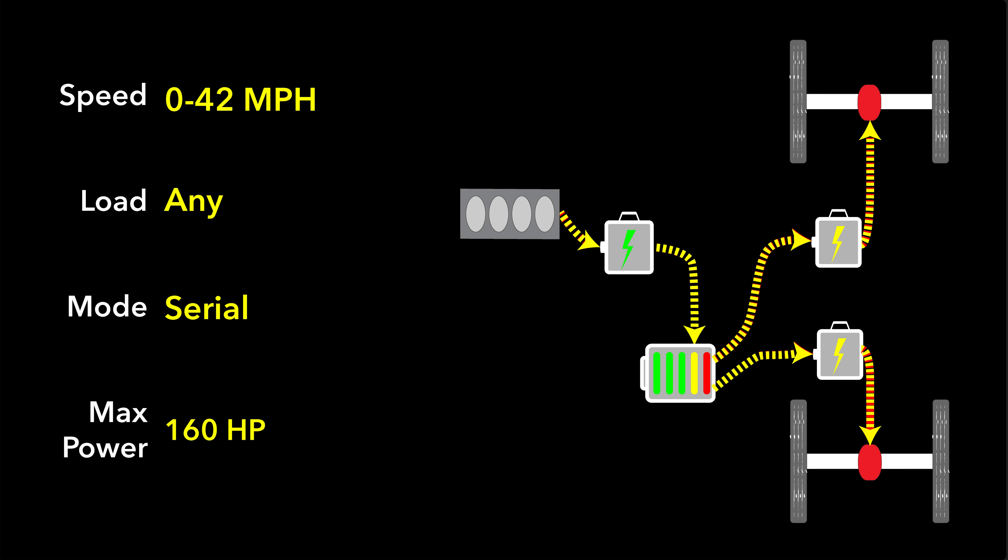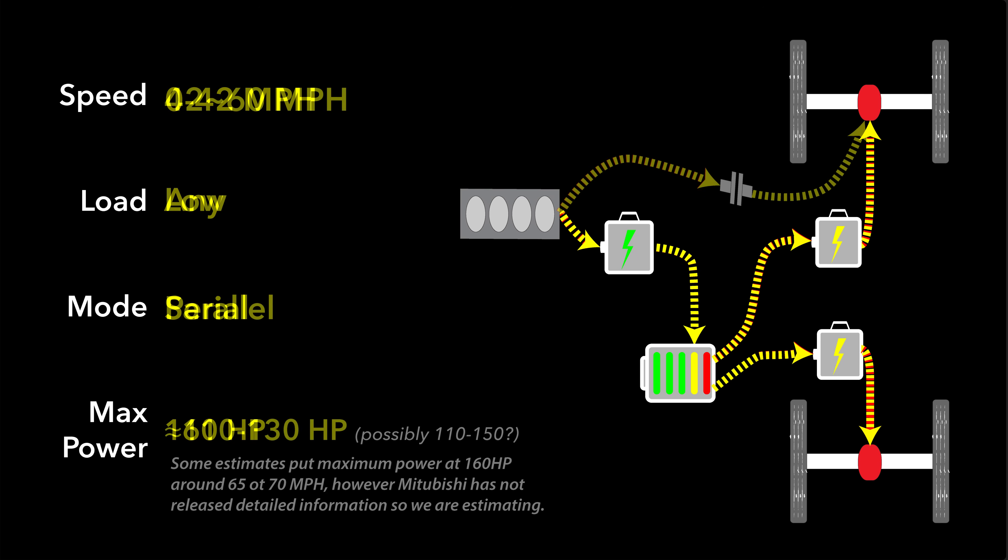Once you get up to highway speeds and the power demands are fairly low, the vehicle will switch into parallel hybrid mode. It will engage that clutch pack and send power directly to the front wheels. If you need power at the rear wheels or if you want to charge the battery or maintain its state of charge, then the vehicle will operate the generator and send power to wherever it's needed.